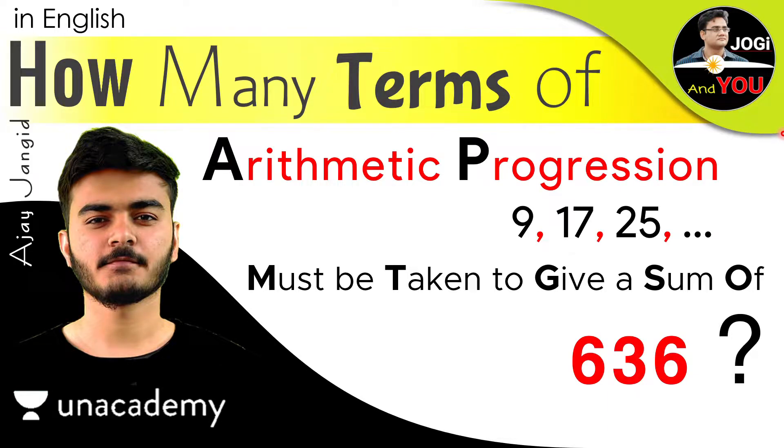Hi, this is Ajay Jangir in this video and you are watching Jogi and You. You are going to learn today a question related to arithmetic progression, which is: how many terms of arithmetic progression 9, 17, 25, dot dot dot till infinite must be taken to give a sum of 636?